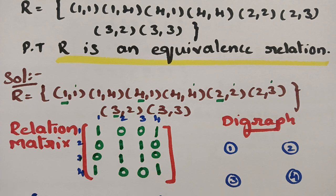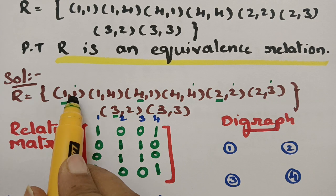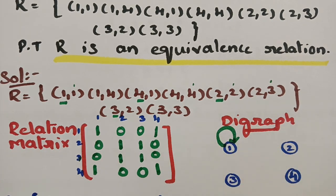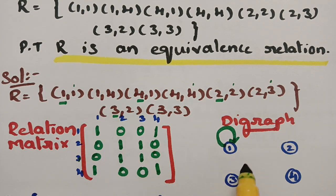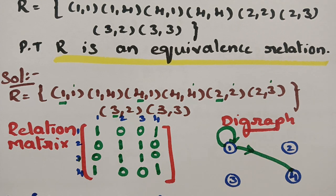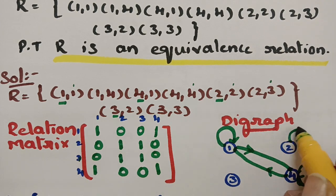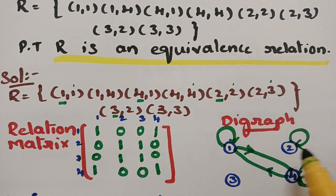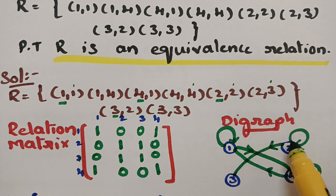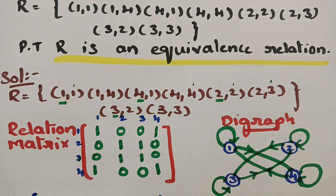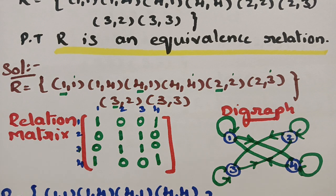Every relation can be represented in two notations: one is the relation matrix and the other one is a digraph. In the digraph, we have 4 vertices — 1, 2, 3, 4. There is a self loop at 1 for (1,1), and an edge from 1 to 4 for (1,4). From 4 to 1 there is an edge, and from 4 to 4 there is a self loop. From 2 to 2 there is a self loop, from 2 to 3 there is an edge. From 3 to 2 there is an edge, and from 3 to 3 there is a self loop. This is the representation of the digraph.